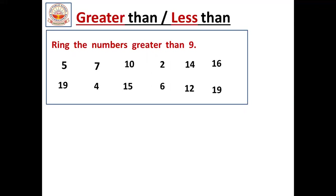After 9, what are the numbers that will come? That one we should circle — greater than 9. See, the first number is 5. Is 5 greater than 9 or less than 9? It's less than 9, so it is a small number compared to 9. 5 is a small number, so we should not circle 5. Next number is 7. Is 7 a big number or small number compared to 9? 7 is a small number — it is less than 9. So we should not circle it.